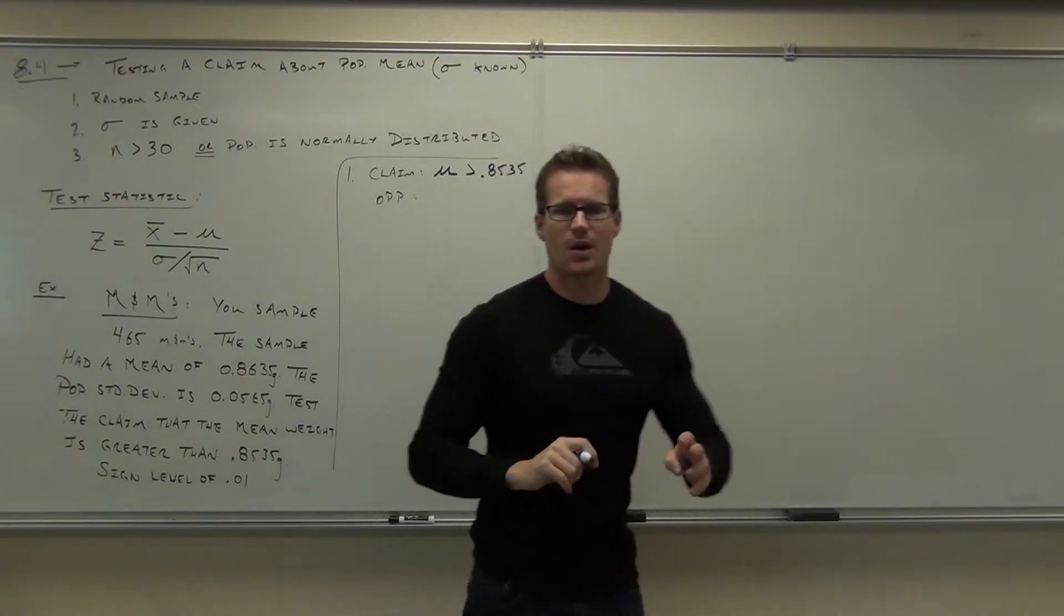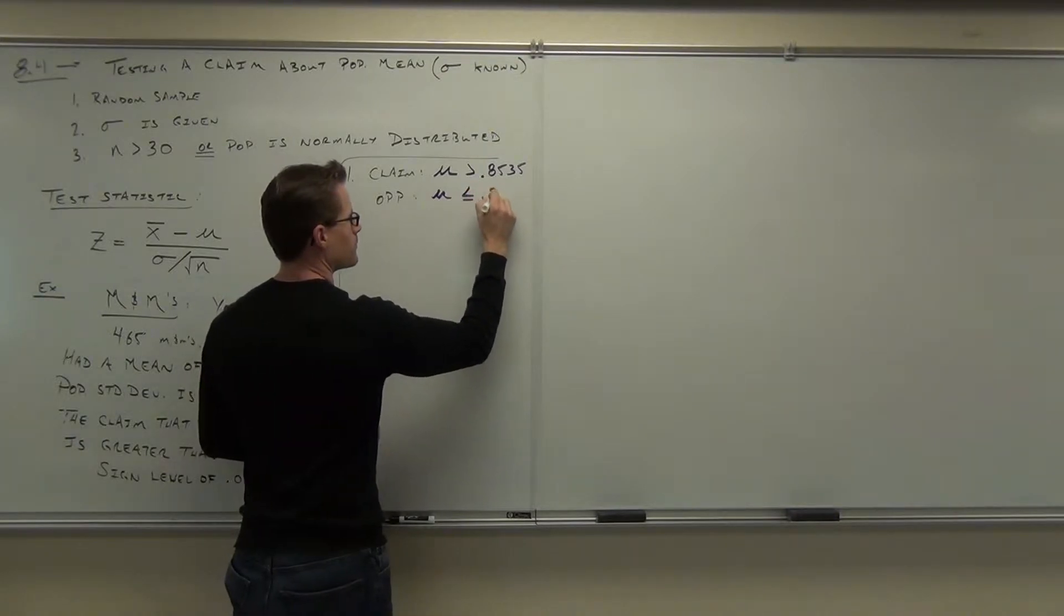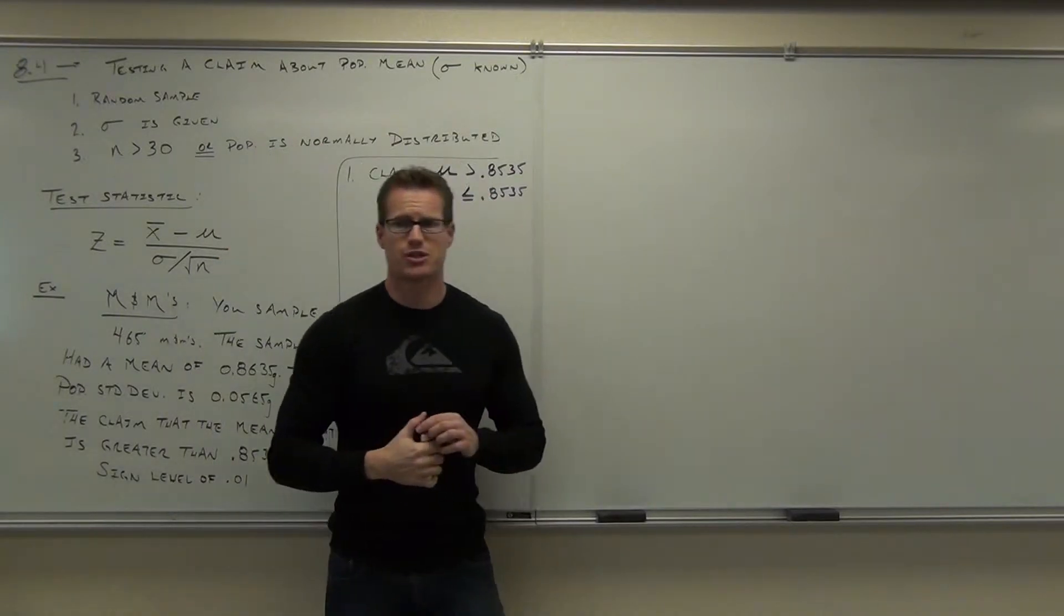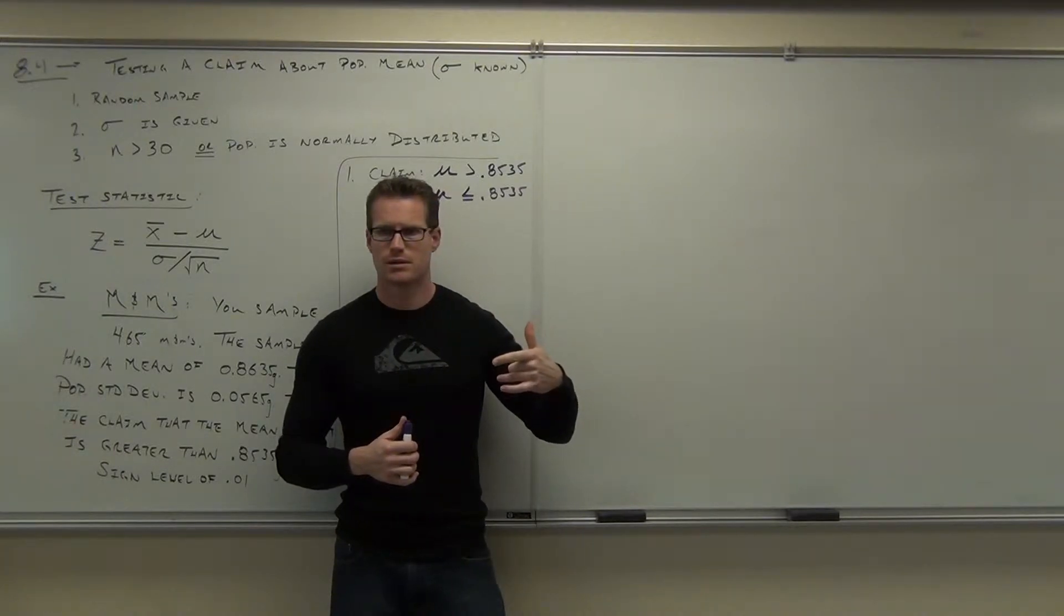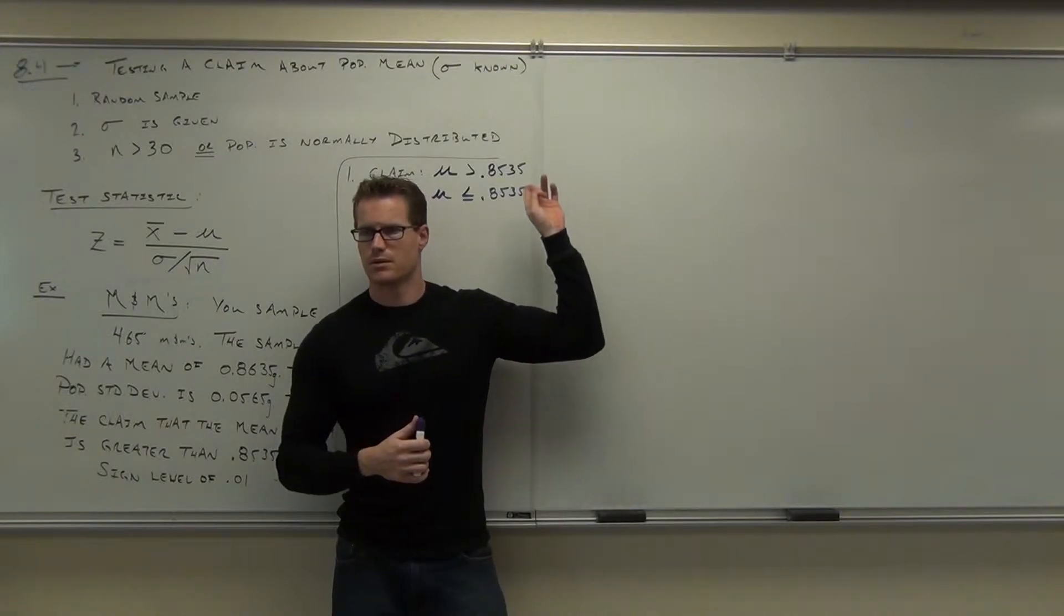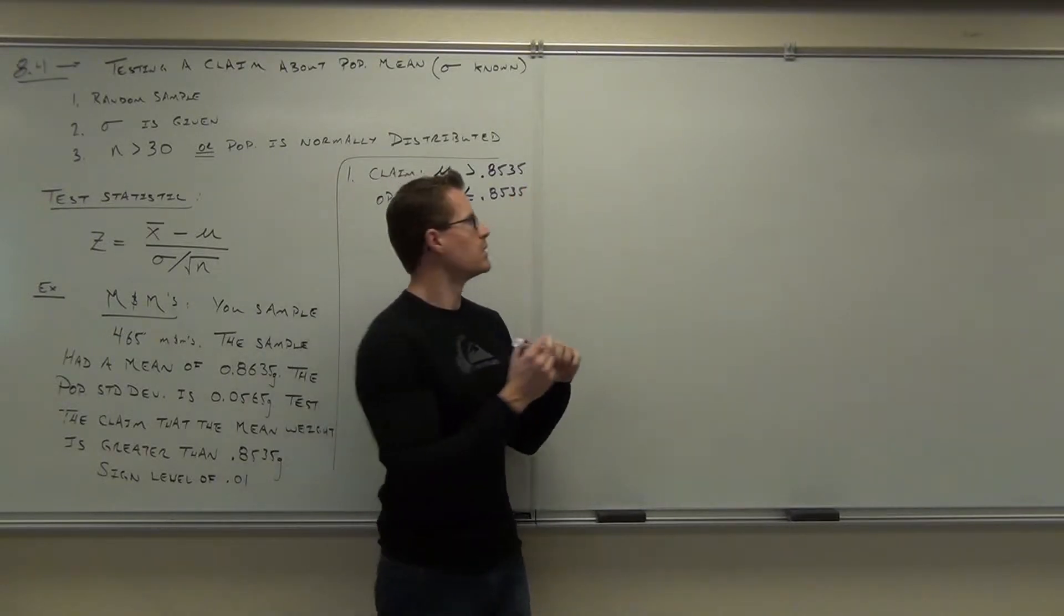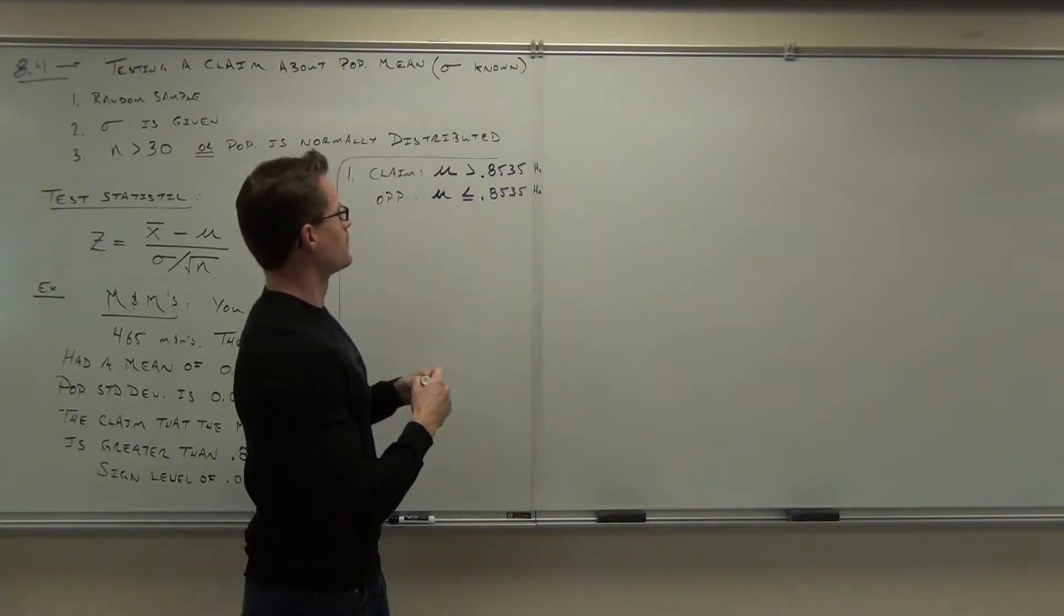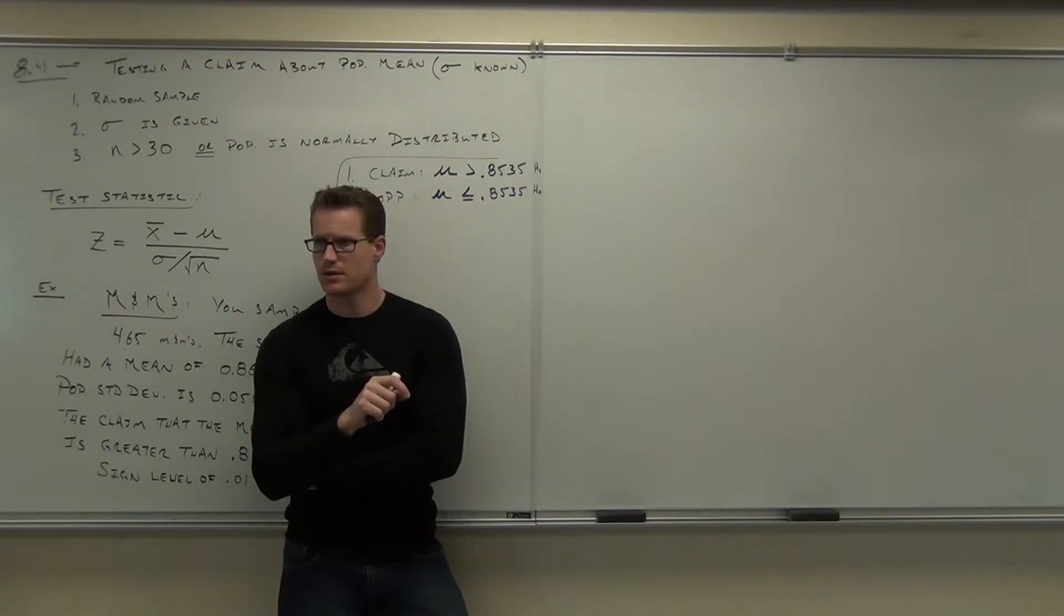Greater than how much? 0.8535. Good. Now state the opposite if you haven't done that already. Hey, critical thinking question right here. Would we be able to prove our claim correct in this case? It's right here. Which one is our H sub zero, the claim or the opposite? The opposite. That makes this one H sub one. Yes, we do.